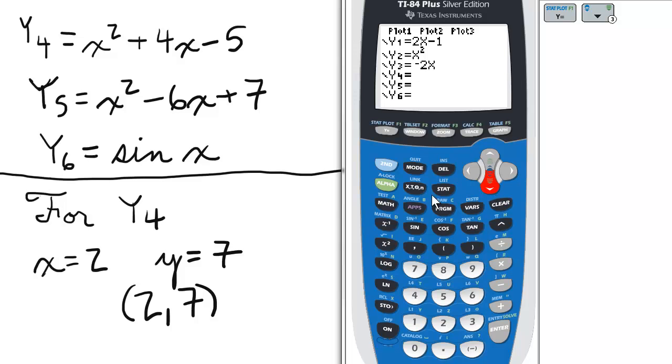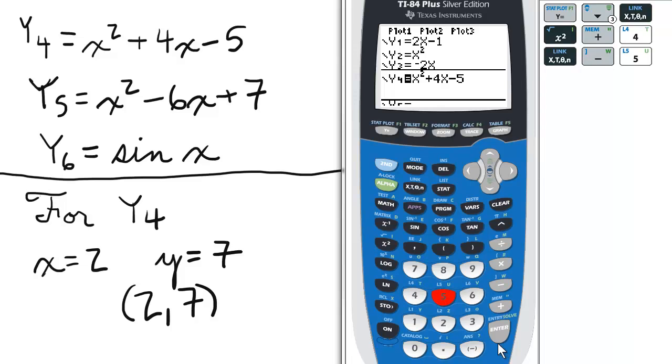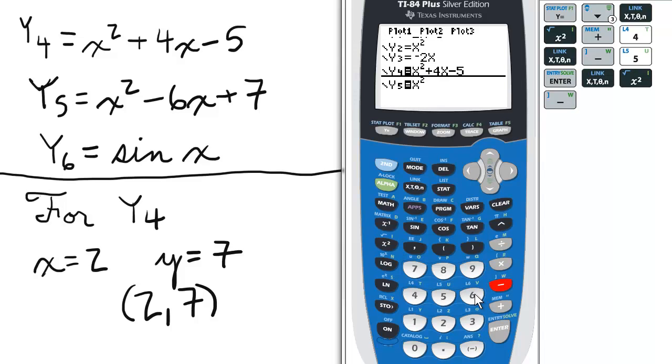Now Y4 will be x squared plus 4x minus 5. Press enter. Y5 will be x squared minus 6x plus 7. I'll just scroll down.